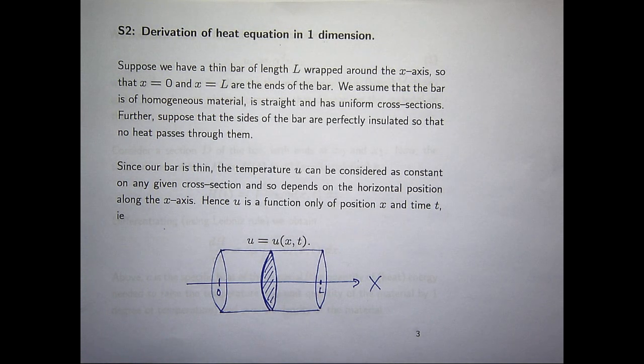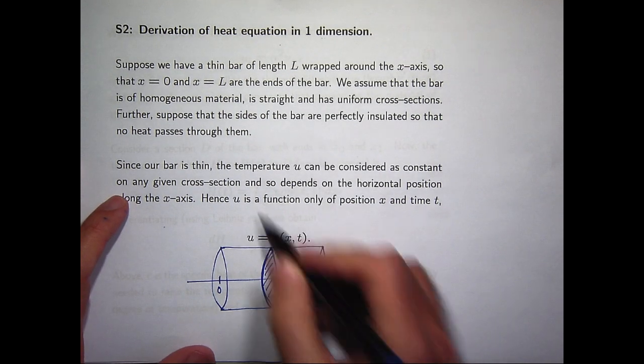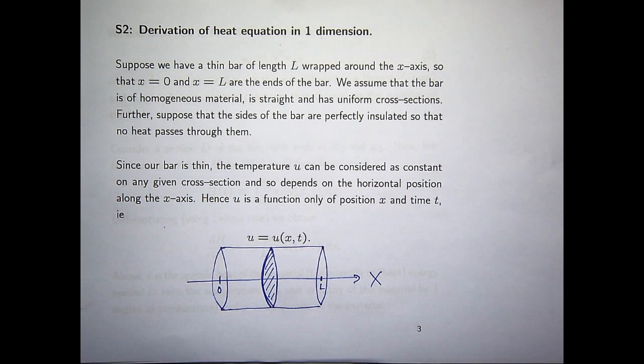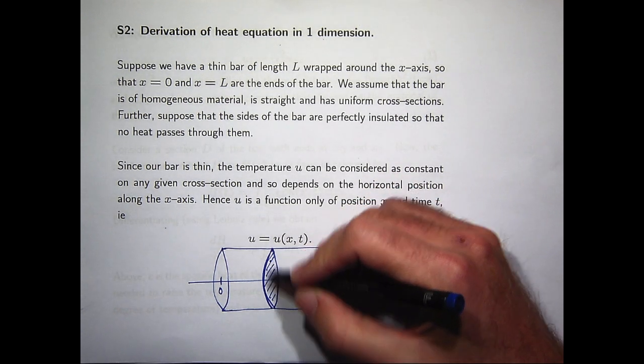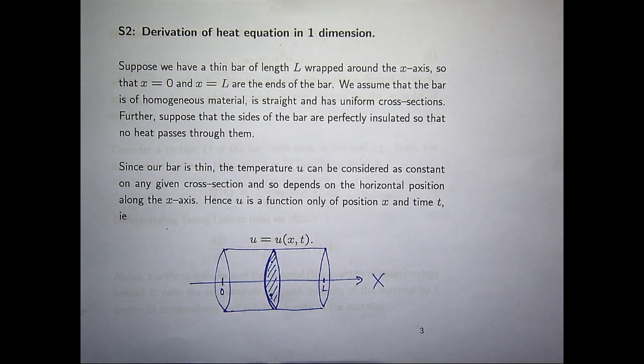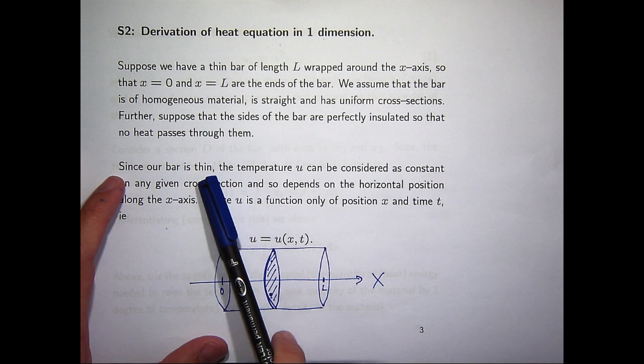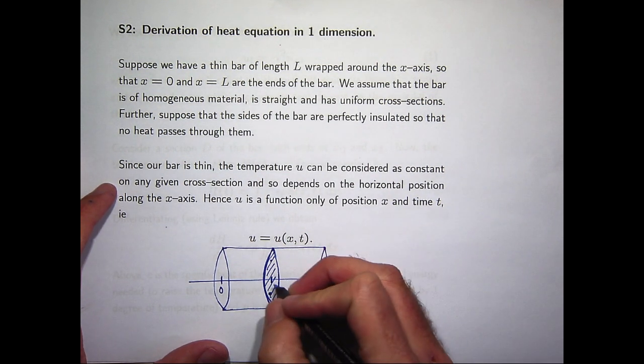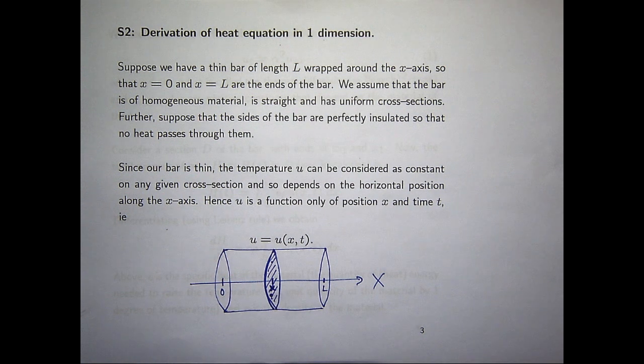Well, because we're considering thin bars or rods, you can think of this profile here, this cross-section. If this is very thin compared to, say, the length of the rod, the temperature is not going to vary very much on that shaded region. So the temperature, say, here, is going to be the same as the temperature over here. So in particular, since our bar is thin, the temperature can be considered as constant on any given cross-section. So if I'm at, say, some point along the x-axis and I draw a cross-section in, the temperature along that cross-section is constant and it's just a function of x.